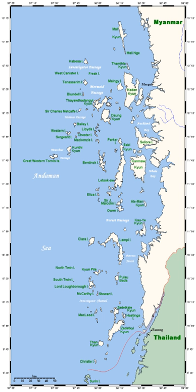Archipelagos may be found isolated in large amounts of water or neighbouring a large land mass. For example, Scotland has more than 700 islands surrounding its mainland which form an archipelago.